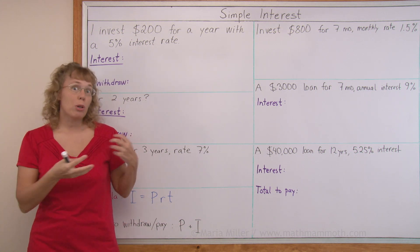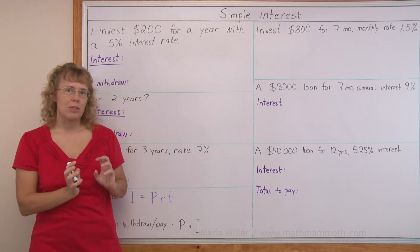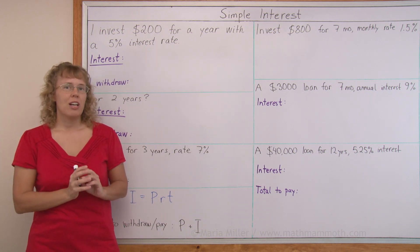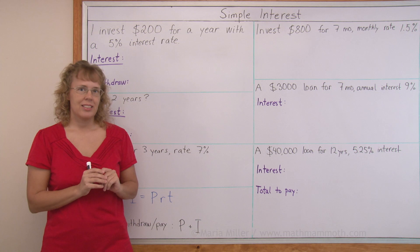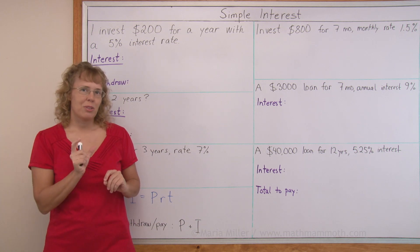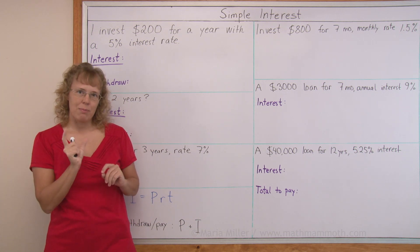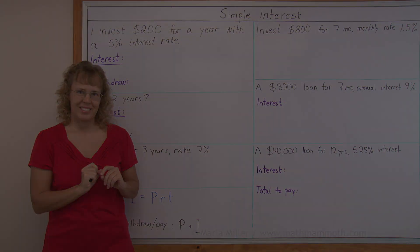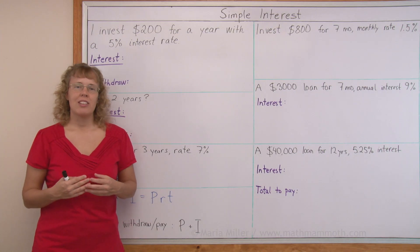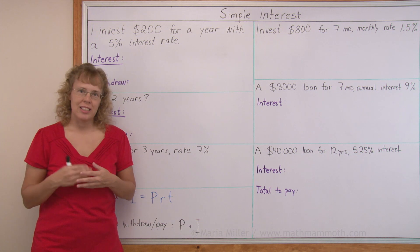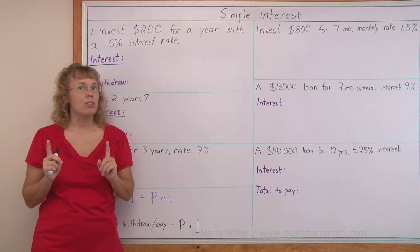It also works if you borrow money from the bank. You borrow a certain amount, but you have to pay back a little bit more than that — or it could be quite a bit more. The amount that you pay more is the interest. Interest is usually given as a percentage of the basic amount, which is called the principal.